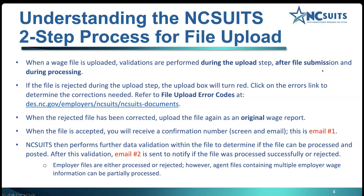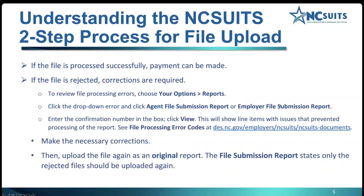The first email says we received it; the second says we've processed it and here's what happened. Until you receive that second email, the file hasn't been processed yet. Note that sometimes files — if an agent is submitting and there are multiple employers — can be partially processed. If the file is processed successfully, you can make payment. However, if it's rejected and corrections are required, go to Options on the left of the screen, select Reports, and choose the agent file submission report or employer file submission report.